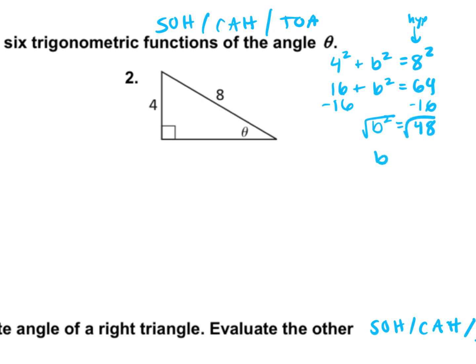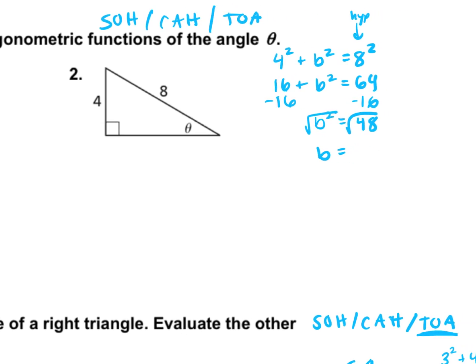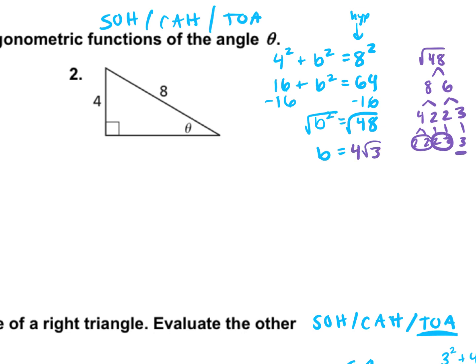Take the square root. Can we simplify the square root of 48? Two factors of 48 are 8 and 6. Two factors of 8 are 4 and 2; 6 is 2 and 3. We have two groups of 2, so 2 times 2 comes to the outside — that's 4 — and 3 stays on the inside. So B equals 4 square root 3.